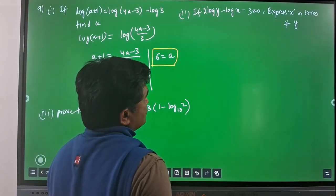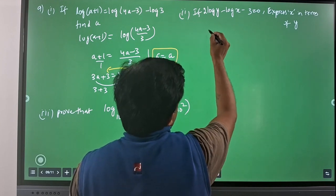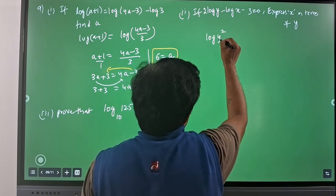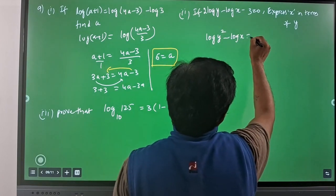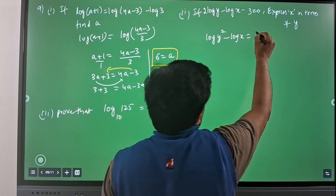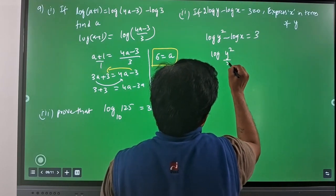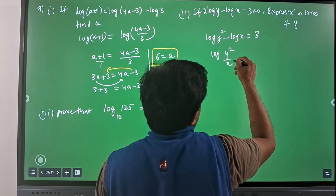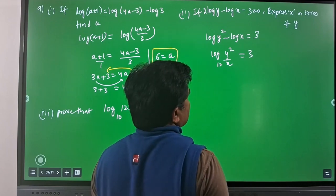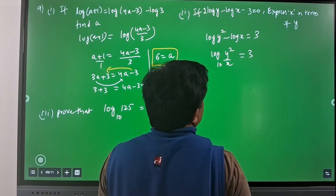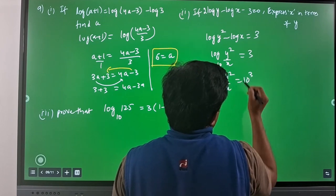Now come to the second part — we need to express x in terms of y. Here we have log(y²) minus log(x), and bringing 3 to that side gives plus 3. This becomes log(y²/x), because log(a) minus log(b) equals log(a/b), which is equal to 3 — best considered as base 10. Converting to exponential form gives y²/x equal to 10³.